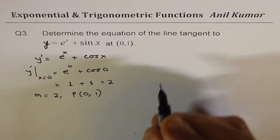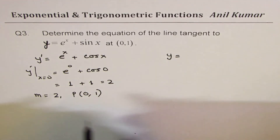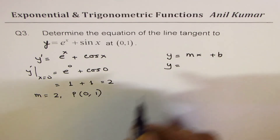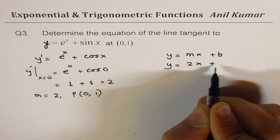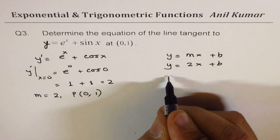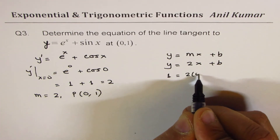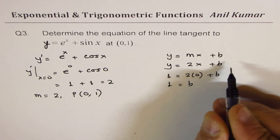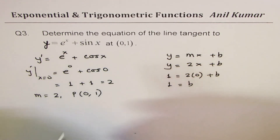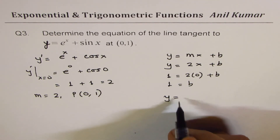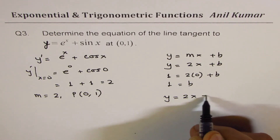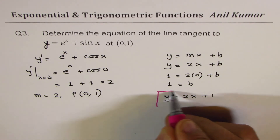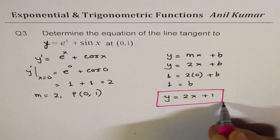With slope m equals 2 and the given point (0, 1), the equation of the line is y equals mx plus b, so y equals 2x plus b. Substituting: 1 equals 2 times 0 plus b, giving b equals 1. The y-intercept is clearly 1. Therefore the equation of the tangent line is y equals 2x plus 1.